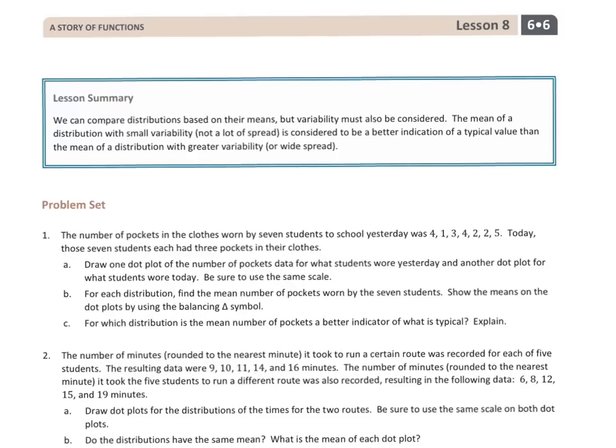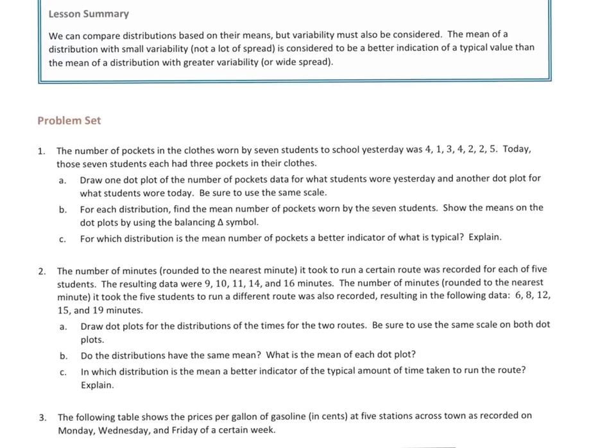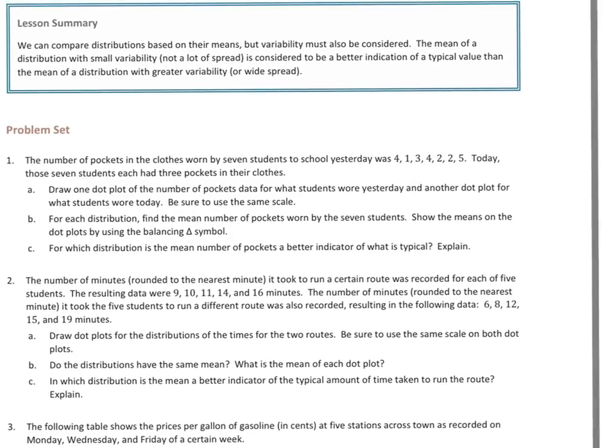For question 1, it says the number of pockets in the clothes worn by 7 students to school yesterday was 4, 1, 3, 4, 2, 2, 5. Today, those 7 students each had 3 pockets in their clothes. Part A says, draw one dot plot of the number of pockets data for what students wore yesterday, and another dot plot for what students wore today. Be sure to use the same scale.